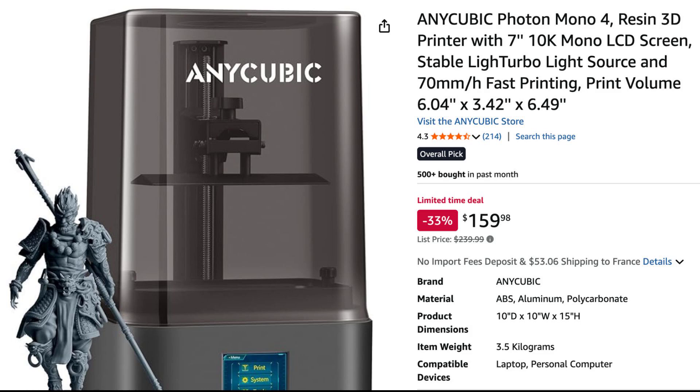Now, let's talk about value. Right now, you can find the Anycubic Photon Mono 4 on Amazon for just $159.98, which is a massive 33% discount from its original price of $219. That's an incredible deal for a 10K resin printer with such advanced features, making it one of the best value choices in its category.